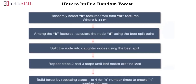Among the k features, we calculate the node split using the best split via entropy and information gain. After splitting the node, we repeat the steps to complete that decision tree. Then we repeat the whole process — steps one through four — n number of times to create n decision trees, which gives us our complete random forest. If you want more detail, watch our random forest video.